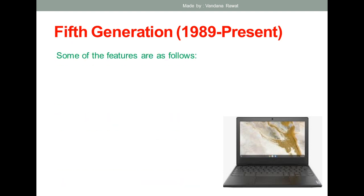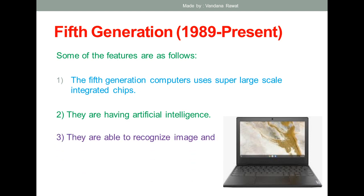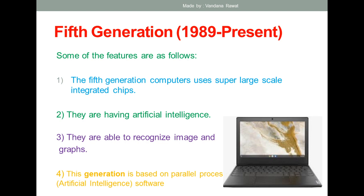Some features of fifth generation computers: they use super large scale integrated systems, or ultra large scale technology — ULSI — meaning VLSI technology has been converted into ULSI. They incorporate the concept of artificial intelligence and are able to recognize images and graphs. This generation of computers is based on parallel processing and artificial intelligence software.